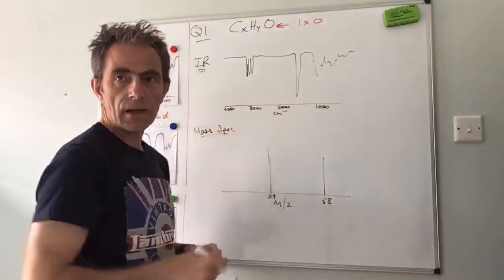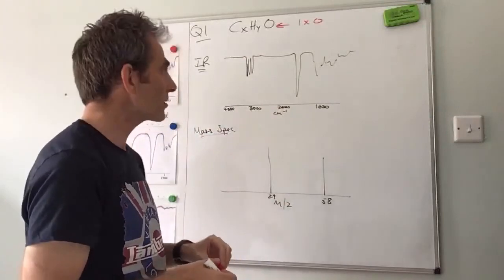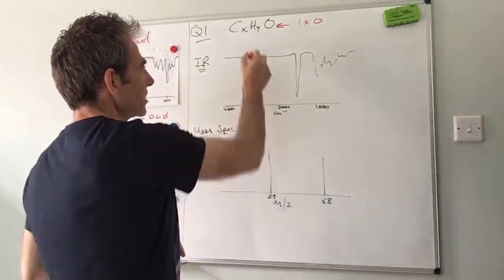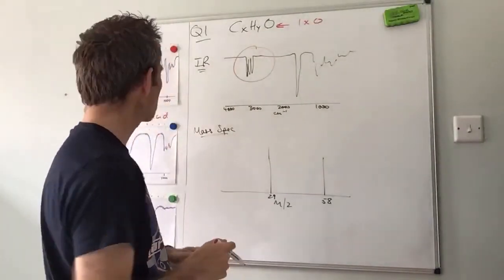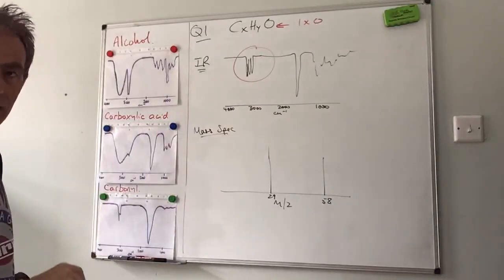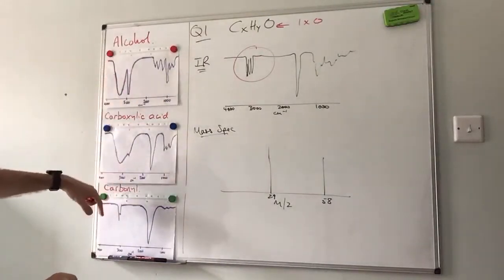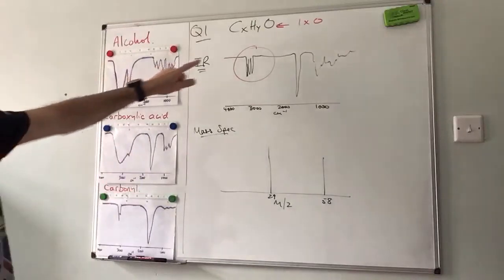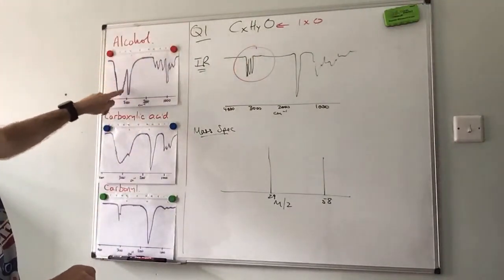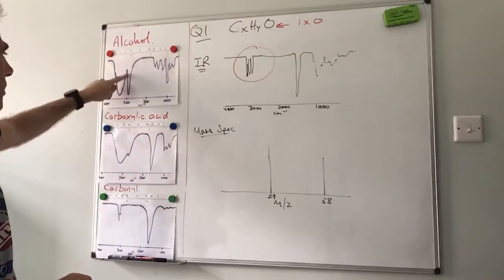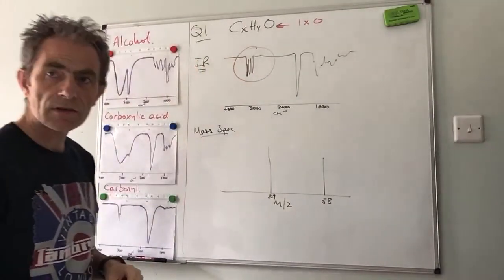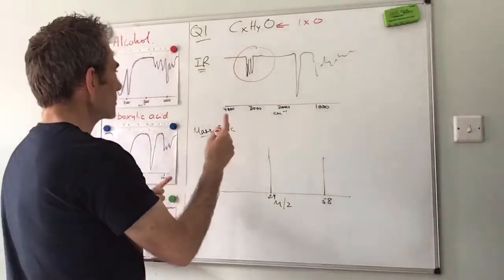Remember that the key zone is around about the 3000 mark. If you've watched my live lessons on Wednesday you'll be familiar with these. We know that it's only got one oxygen, so really it can only be an alcohol.